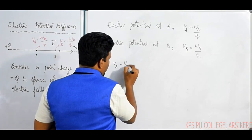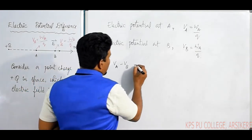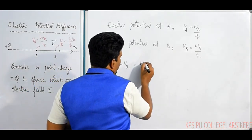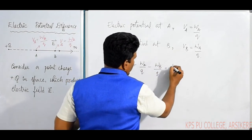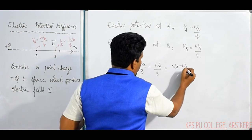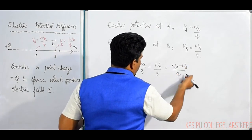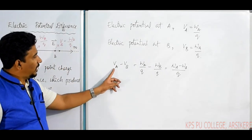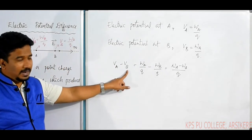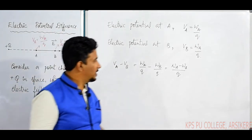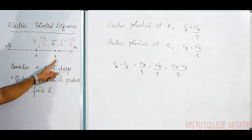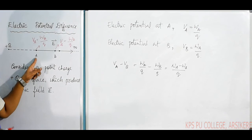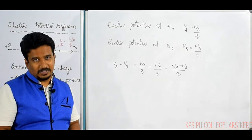The potential difference VA minus VB equals WA divided by Q minus WB divided by Q, which simplifies to WA minus WB all divided by Q. So the potential difference between A and B is the work done in bringing the charge from point B to point A in the electric field. Am I clear with this concept?